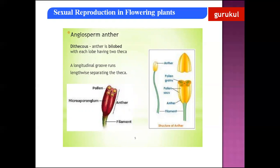The main part of the stamen is the anther. Anthers are either dithecous or monothecous. Dithecous anthers are bilobed — having two lobes. Each lobe has two thecae, or pollen sacs. When you take the transverse section of the anther, there are two lobes called anther lobes, and each lobe has a pollen sac, also called microsporangia or microsporangium.